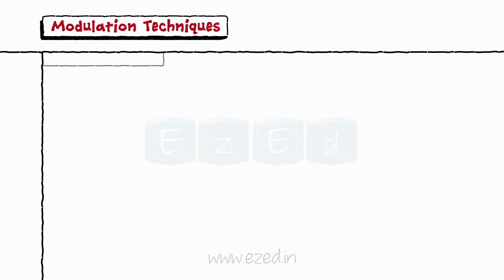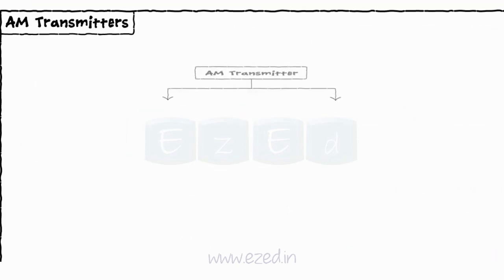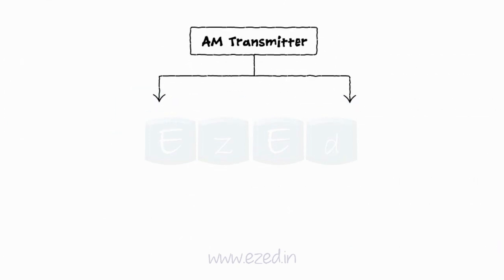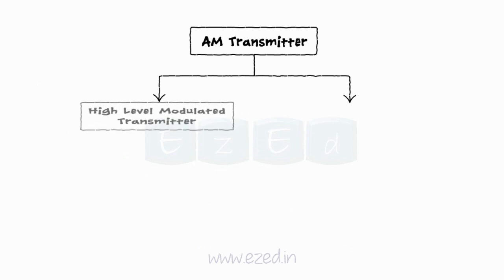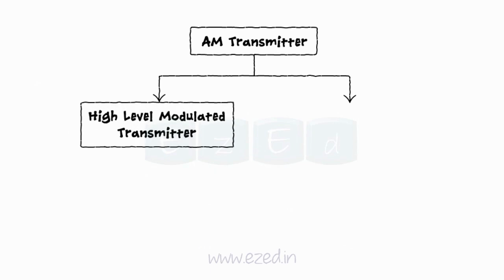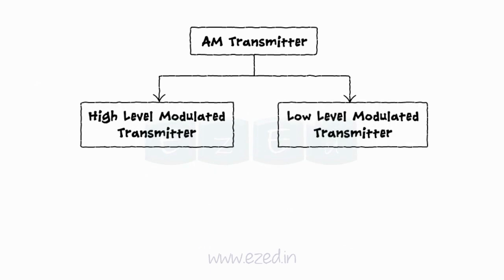Now we can move on to learn about AM transmitters, which are of two types: high level modulated transmitter and low level modulated transmitter.